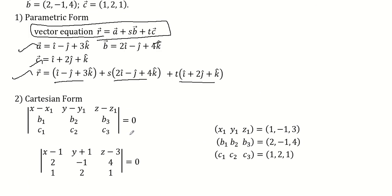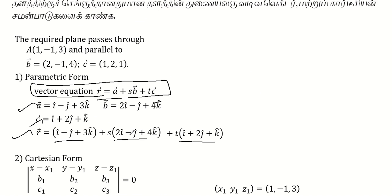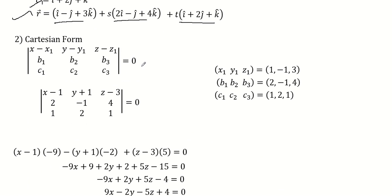For the Cartesian equation, we use the form: determinant of x minus x1, y minus y1, z minus z1; b1, b2, b3; c1, c2, c3 equal to 0. So x1, y1, z1; b1, b2, b3; c1, c2, c3 equal to 0.